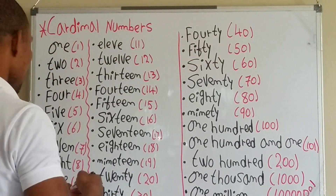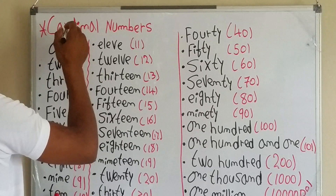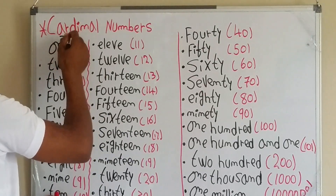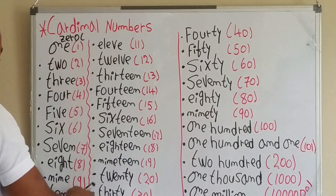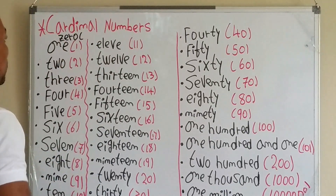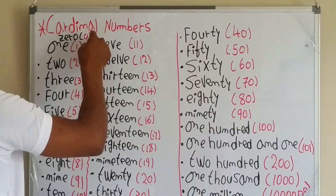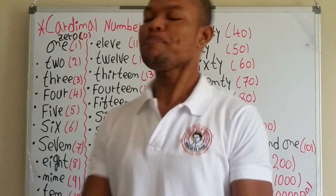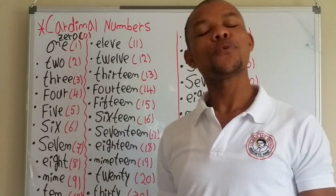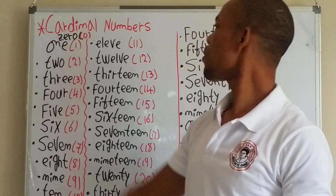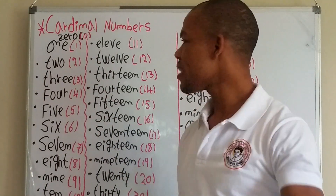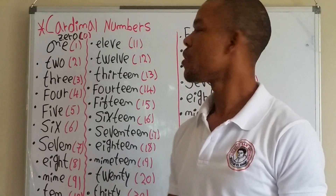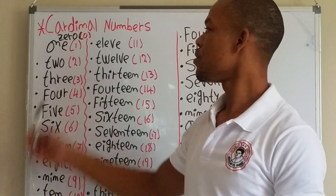So we say: zero. Zero. Zero. One. One. Two. Two.